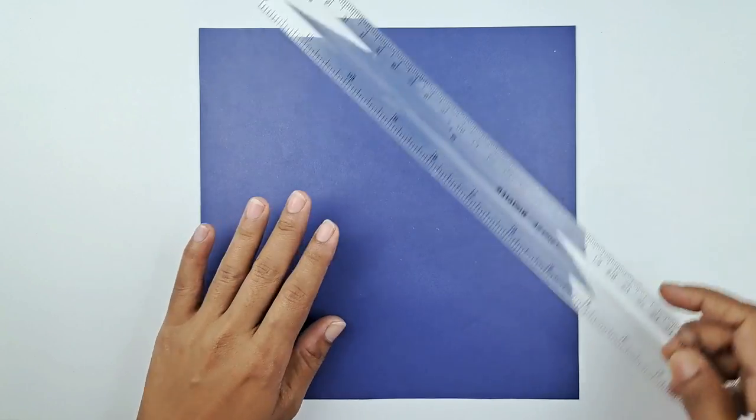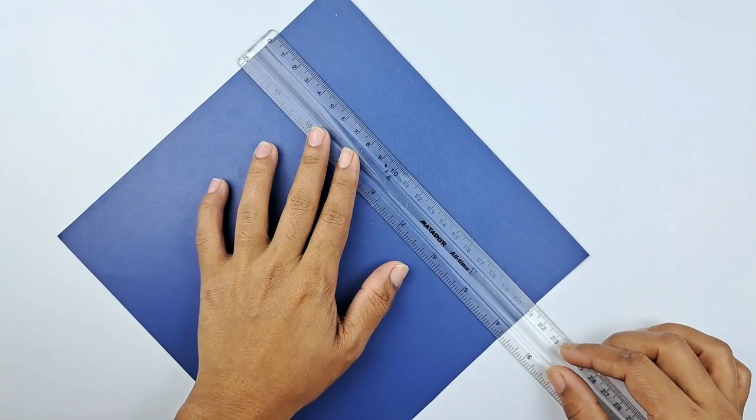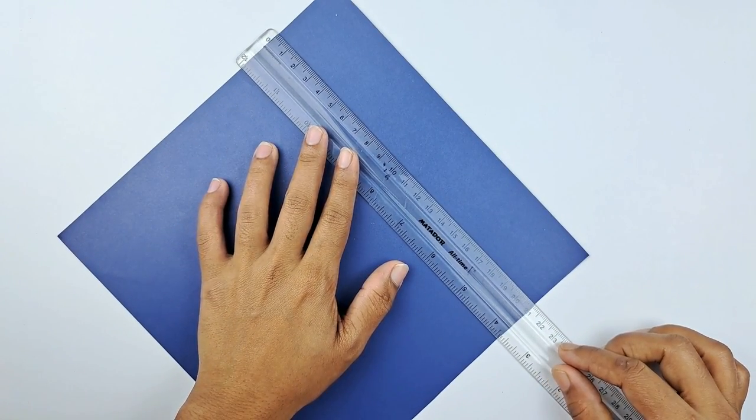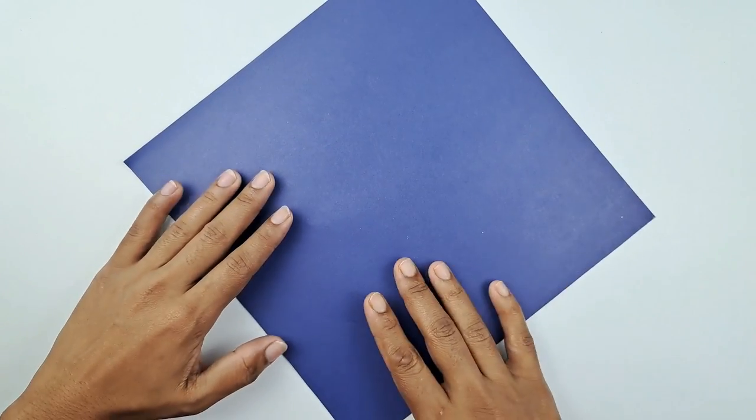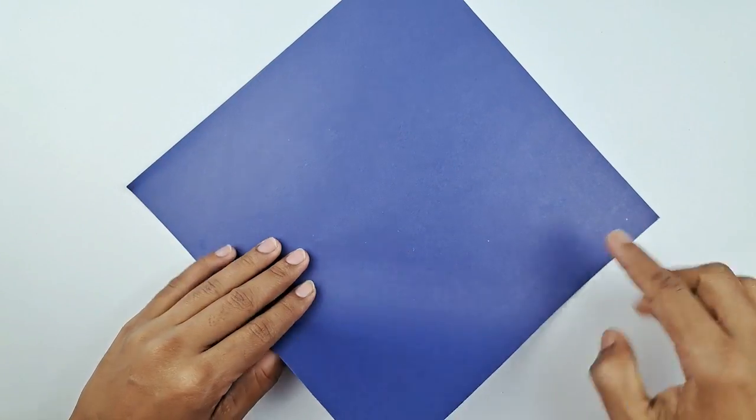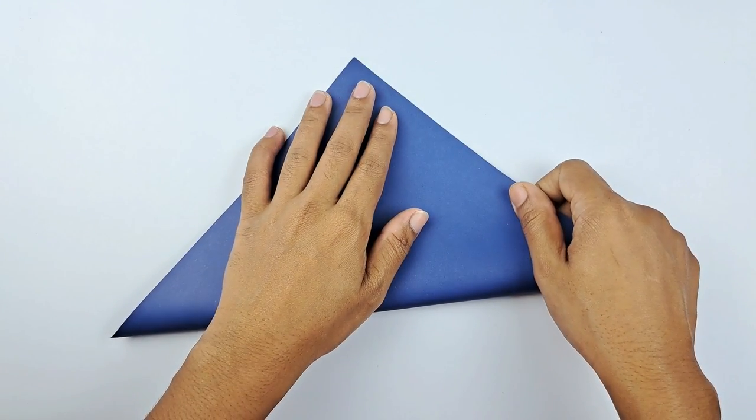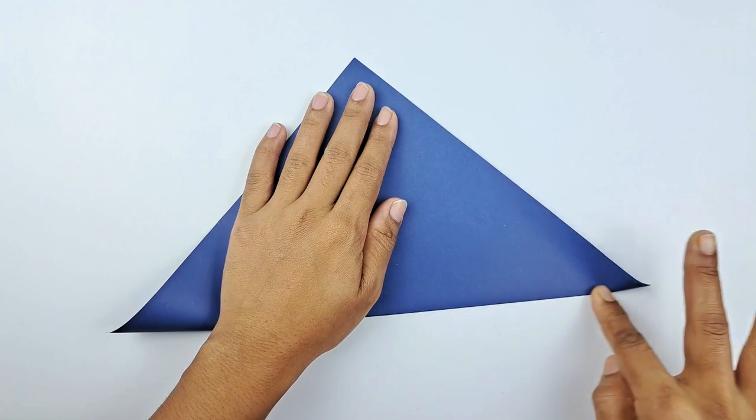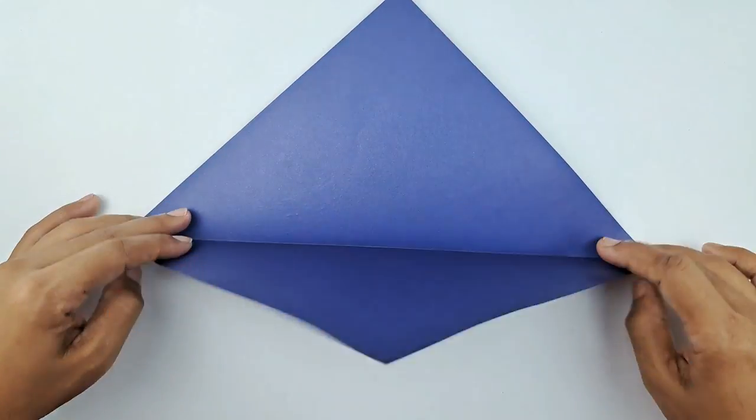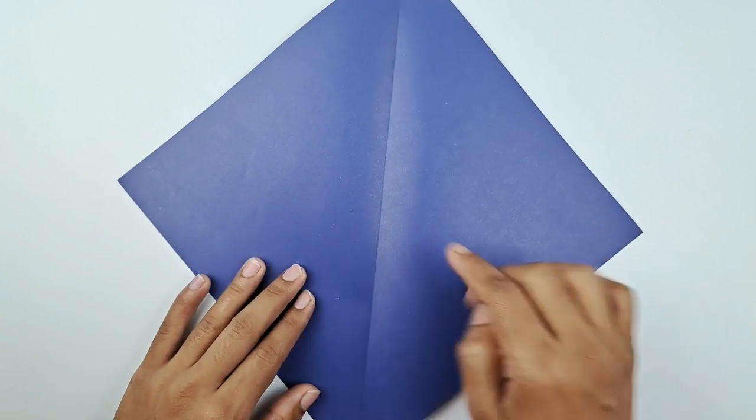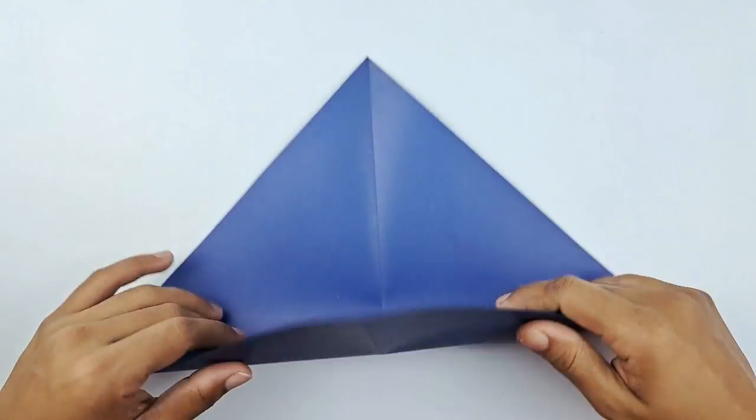So we're going to take a square piece of blue paper. You can choose any color you like, of course. And we're going to fold it into a triangle from one corner to the other, like so. And then we're going to repeat again, like this.